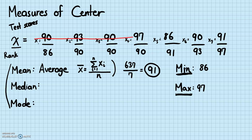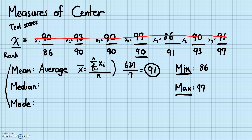Once you've put your data in order, the median is going to be the middle number. Since there are seven numbers here, the middle number is the fourth number — there are three numbers on each side of it. So the median is 90.